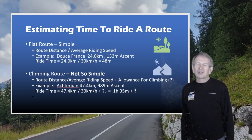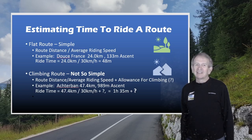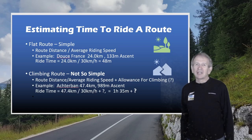But what about a climbing route? Well, that's not so simple. You take your route distance and divide it by your expected average riding speed, but then you have to add an extra allowance for all that climbing.